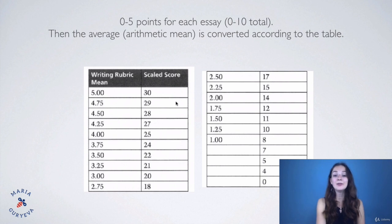Then they look at the table and convert this score to their scaled score from zero to thirty. So let's say you have 4.5 arithmetic mean, then your score for the writing section is going to be 28.